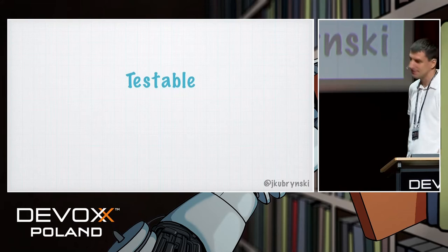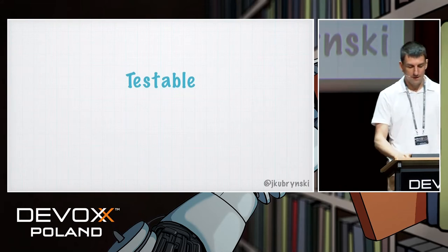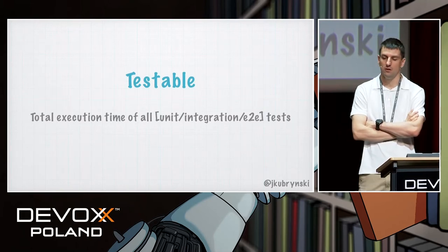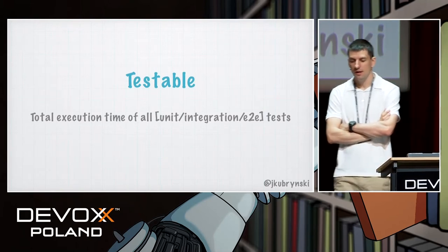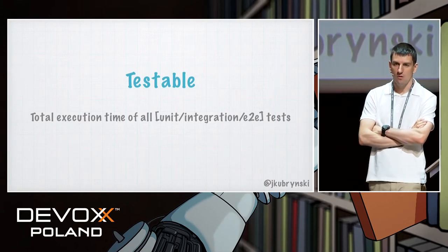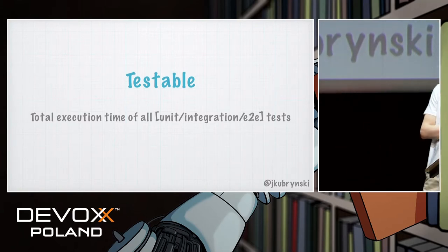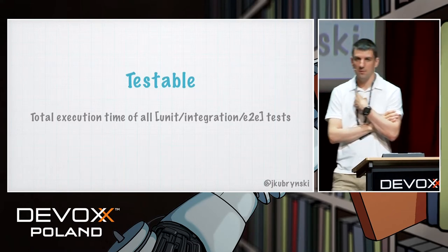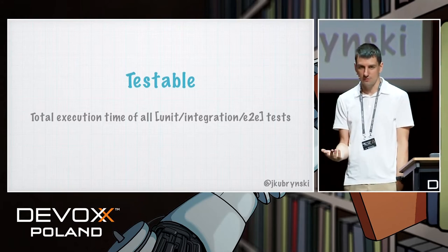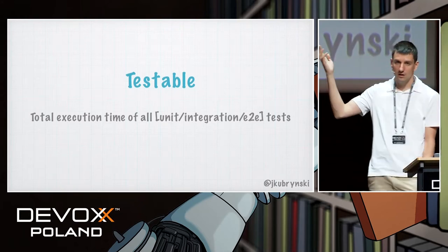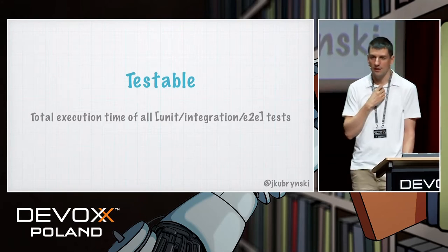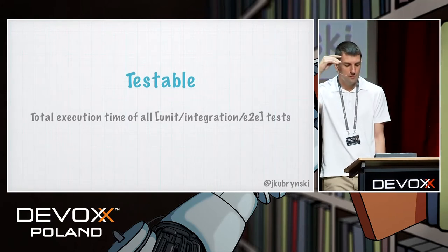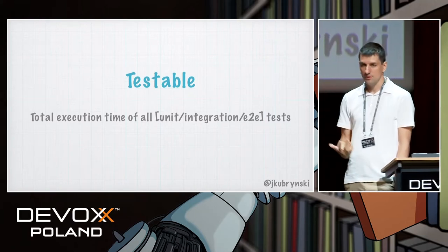Testability. For me, testability means the total execution time of all unit tests is 30 seconds. Why is that testability? Because if it takes more, people start to ignore the tests. If you ignore tests, you're not testing your software, so it's not testable. That's my idea, and it's easy to measure — there are no problems applying such metrics.